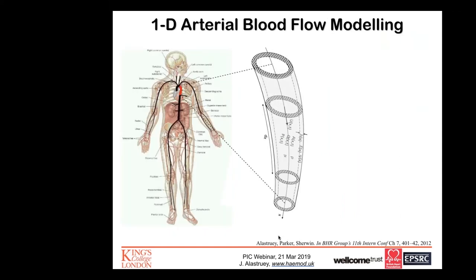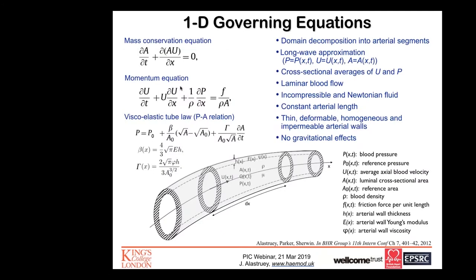In the 1D formulation, we decompose the arterial network into arterial segments, which are connected to each other at nodes. Each segment is simulated as a thin and deformable elastic tube whose properties can be described by a single axial coordinate X. We use the physical principles of conservation of mass and conservation of linear momentum, together with a set of assumptions, to write two governing equations — a system of partial differential equations governing blood flow in an arterial segment. The variables are the cross-sectional area A, the blood flow velocity U, and the blood pressure P, which depend on the axial coordinate X and time T.